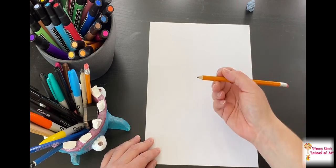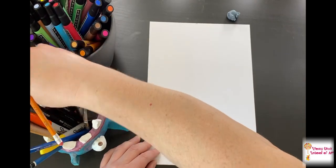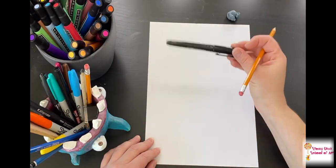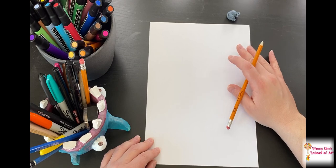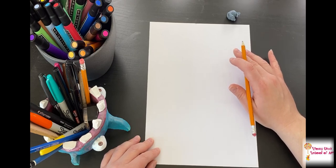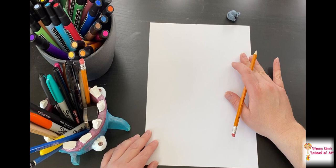We need a pencil, eraser, a black outlining marker, and something to color with. I might use markers or pencil crayons. You could use crayons, whatever you have at home.